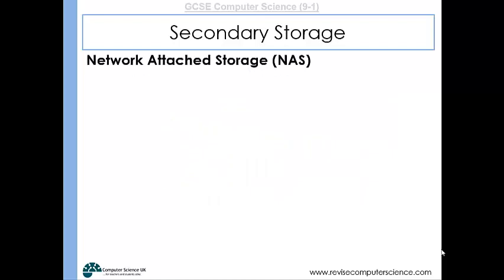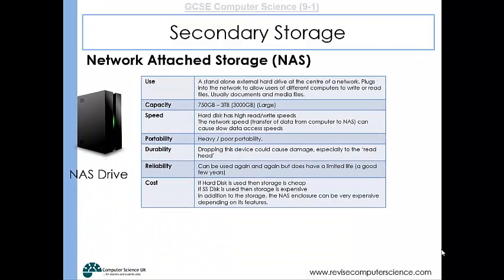There are also storage devices using magnetic or solid state technology called Network Attached Storage (NAS). A NAS drive is essentially a hard disk attached to a network, which is really good if you have several computers in your household or office and want them all to access the same data. A NAS drive has similar capacity, portability, durability, and reliability to a hard disk, but because it connects to a network, the effective read and write speed depends on the network speed. It is ideal for central file storage or shared programs across multiple computers.